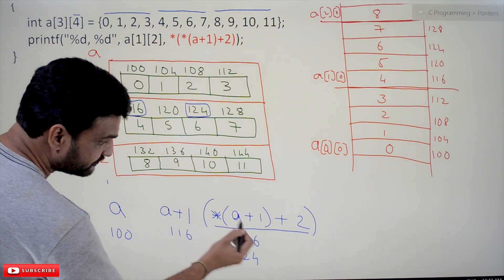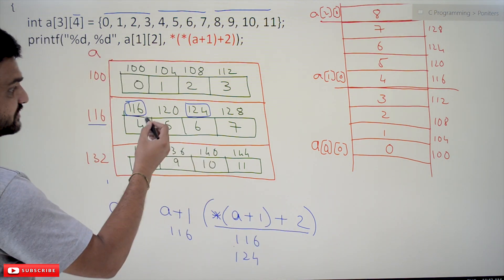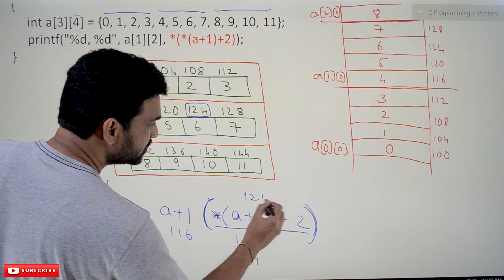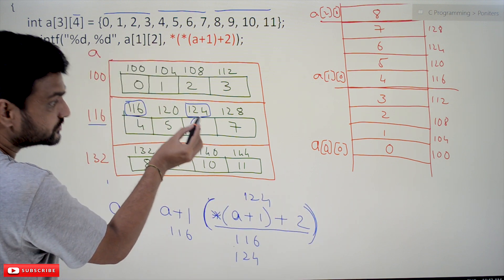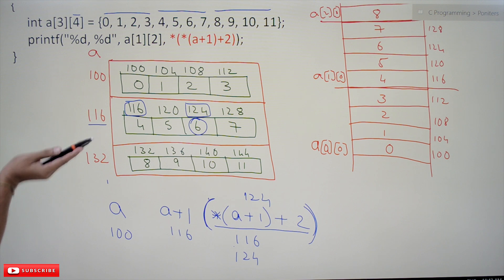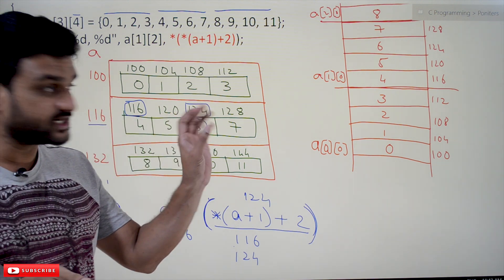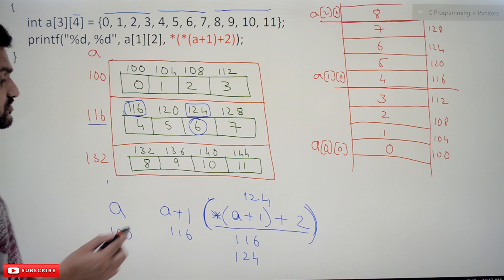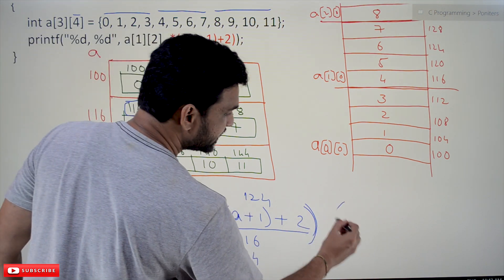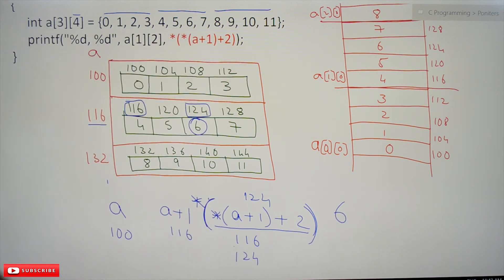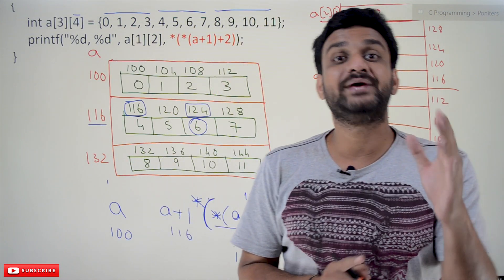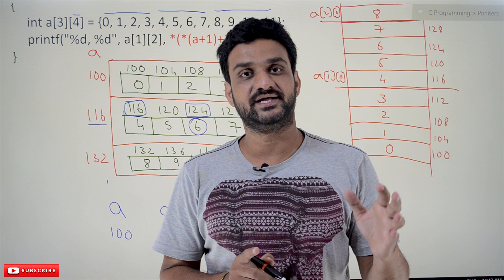Now that we have the address 124, to get the actual value stored at it we apply the star operator again: *(*(a+1)+2). The value stored at address 124 is 6. So the final result is 6. This is how pointer arithmetic works with two-dimensional arrays — the star operator takes us inside, and the starting address of the inner array is picked up.